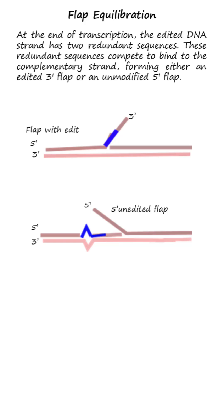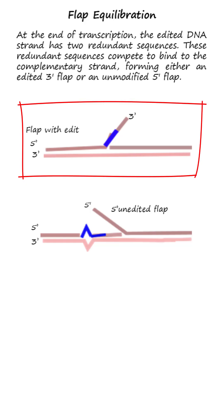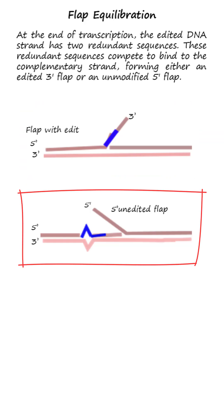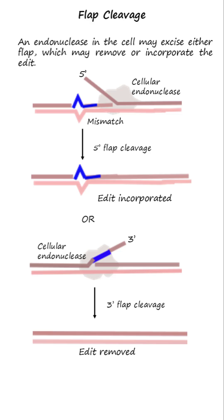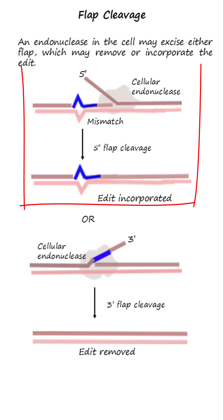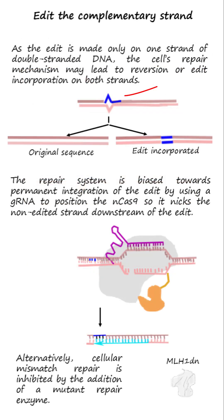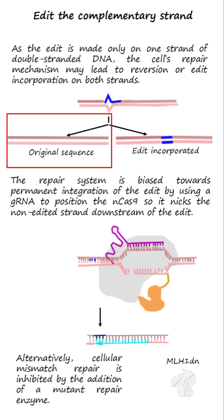These redundant sequences compete to bind to the complementary strand, forming either an edited 3' flap or an unmodified 5' flap. An endonuclease in the cell may excise either flap, which may remove or incorporate the edit. As the edit is made only on one strand of the double-stranded DNA, there is a mismatch between the two strands. Thus, the self-repair mechanism may cause reversion back to the original sequence by removing the edit.